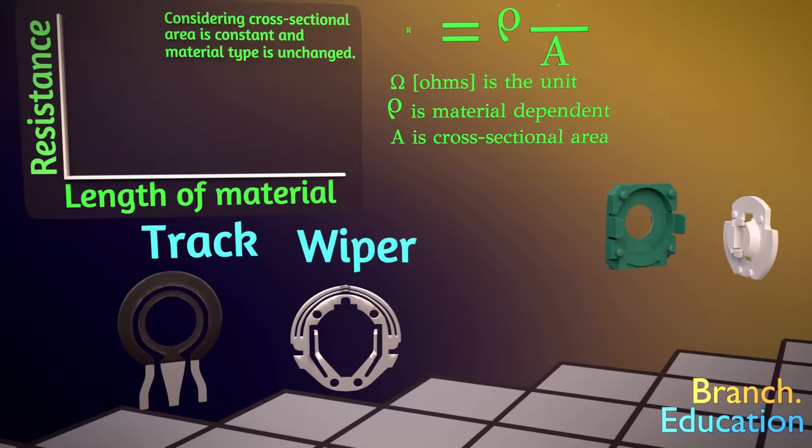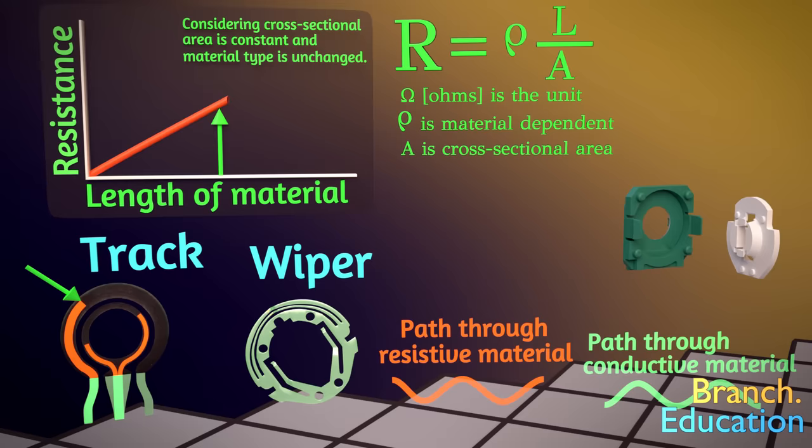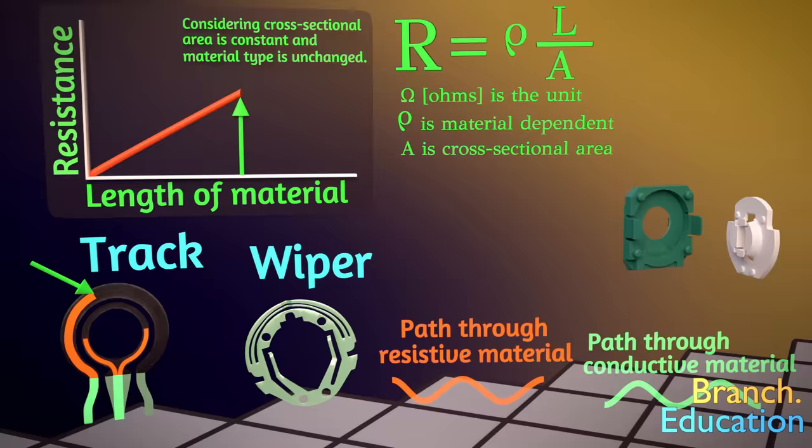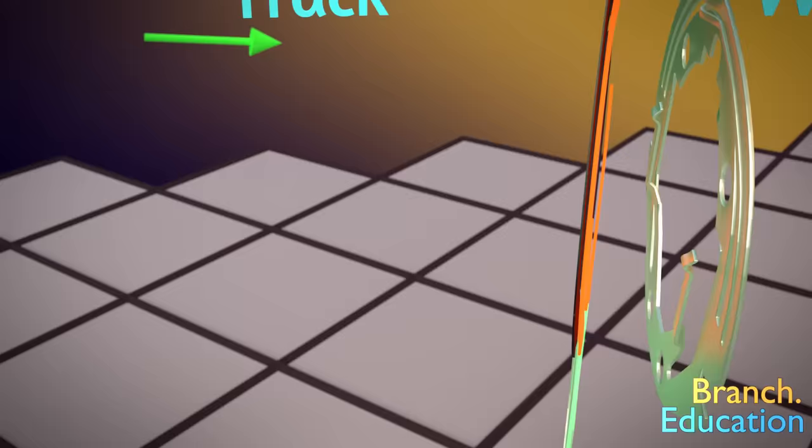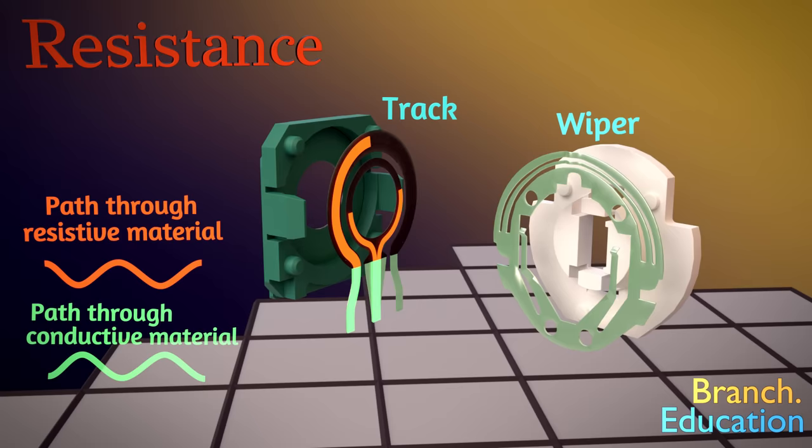The key concept is that electrical resistance is proportional to the length of the resistive material. So if we're able to vary the length of the electrically resistive material, we can vary the overall resistance, which the microcontroller can easily measure. When we rotate the wiper, the position where the wiper contacts the track changes, and thus changes the effective length of the resistive material that electricity flows through. Let's follow the path of electricity.